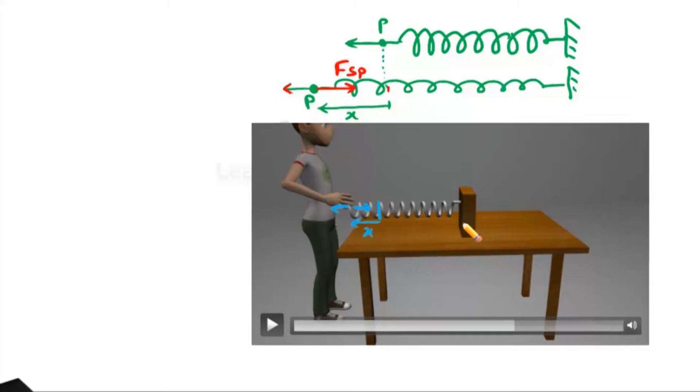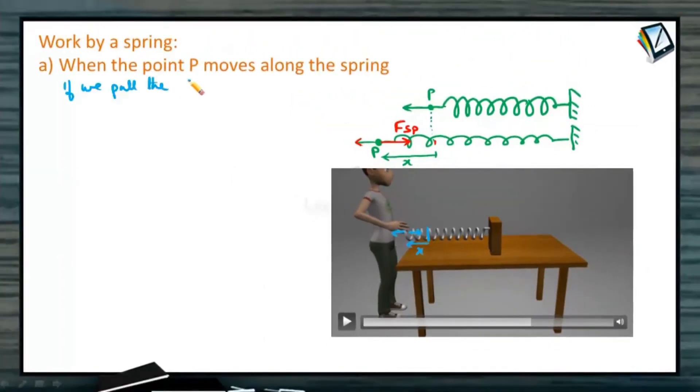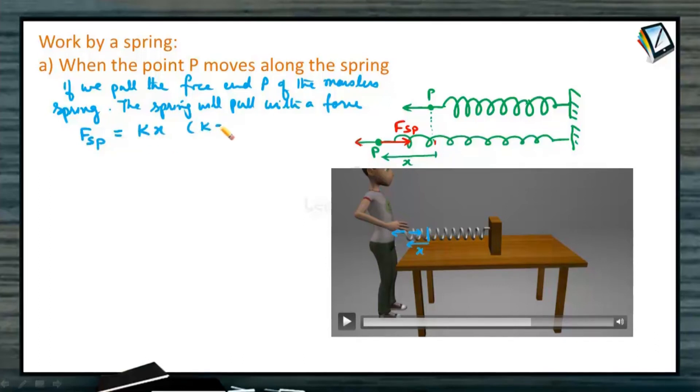If you pull the free end P of the massless spring, the spring will pull with a force Fsp. This is the spring force. That spring force will be Kx, where K is the stiffness, force per unit length of the spring.